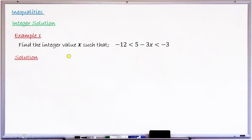For the solution to this problem, as usual, we split this compound inequality into two simple inequalities and find the individual solution of each. It is the range of values satisfying both simple inequalities that will serve as the solution of this compound inequality.